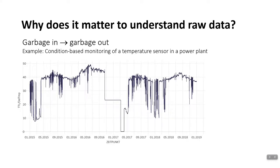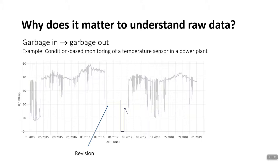Here is a specific example from a utility company. It was about condition-based monitoring of a power plant sensor. This is what the raw data of the sensor looks like over four years. Many things would only distort the model. For example, the straight line is a longer revision of the power plant.